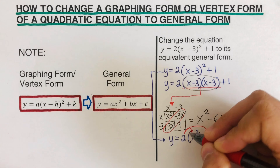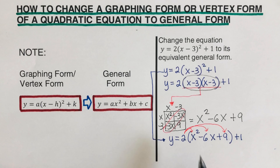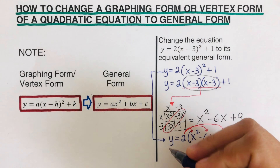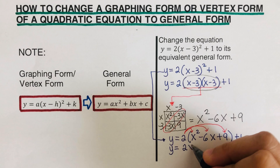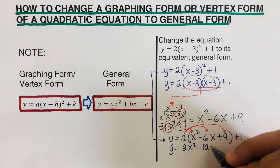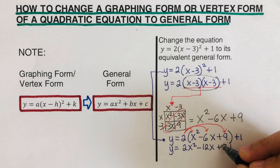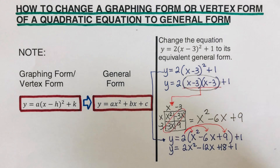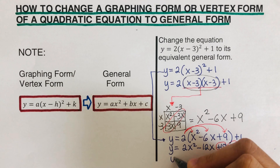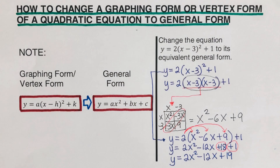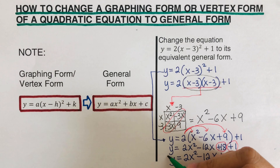Please note that the two is only distributed to the terms inside the parentheses — not to the one outside. So: two times x squared is 2x squared, two times negative 6x is negative 12x, two times 9 is 18. Then we combine the constants: 18 plus 1 equals 19. The final equation in general form is y equals 2x squared minus 12x plus 19.